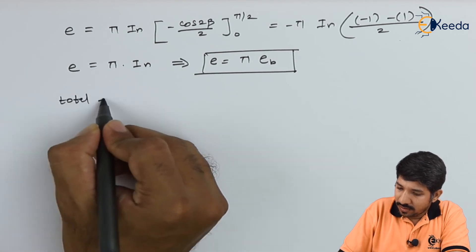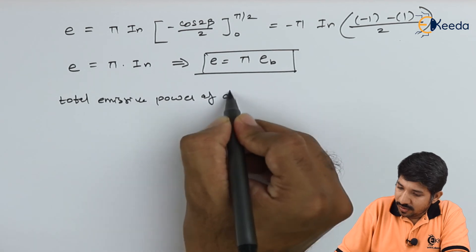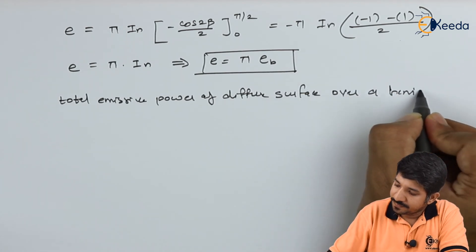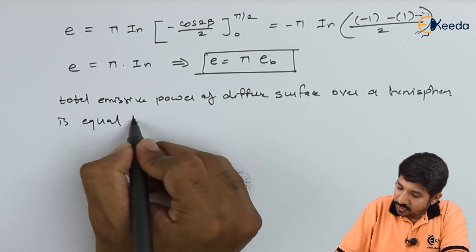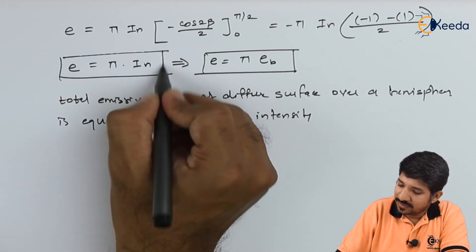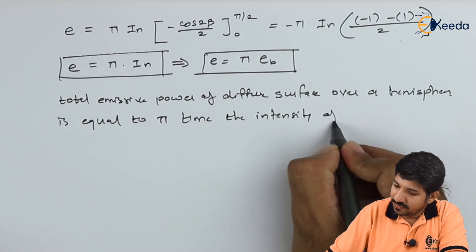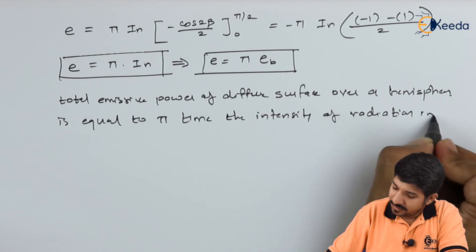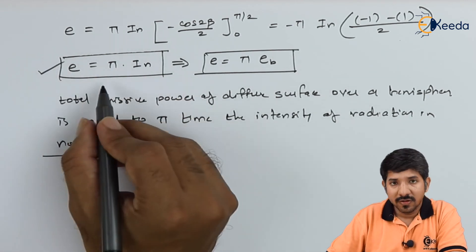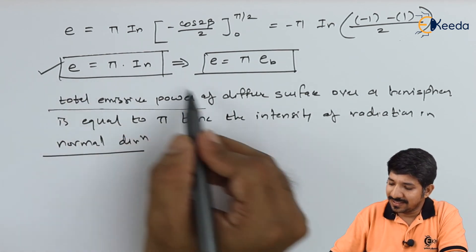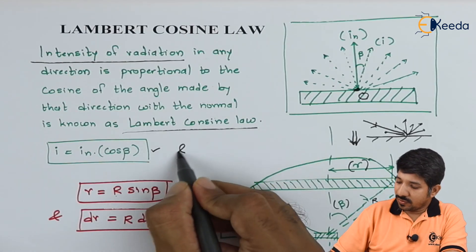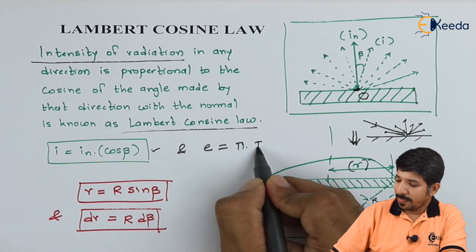Thus, we can write down that the total emissive power of the diffuse surface over a hemisphere is equal to π times the intensity of radiation in the normal direction. So the conclusion is that E equals π times IN. This is a very important equation: the total emissive power E is nothing but π times the intensity of radiation in the normal direction.